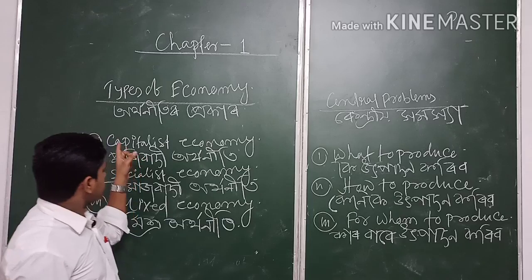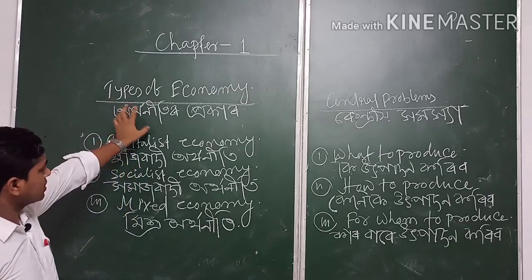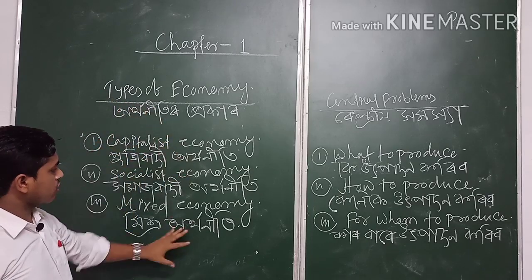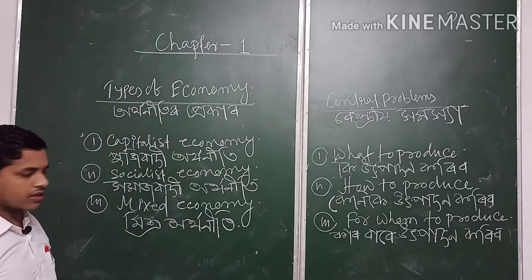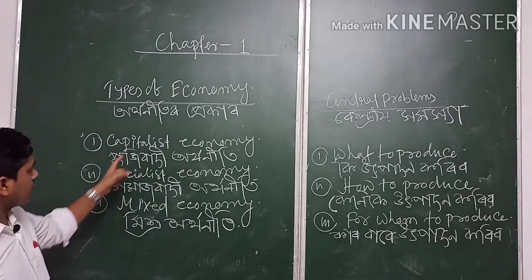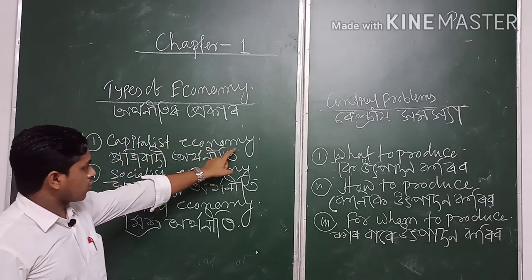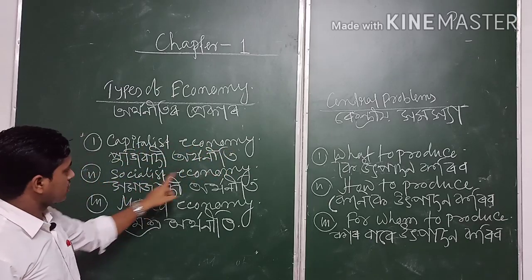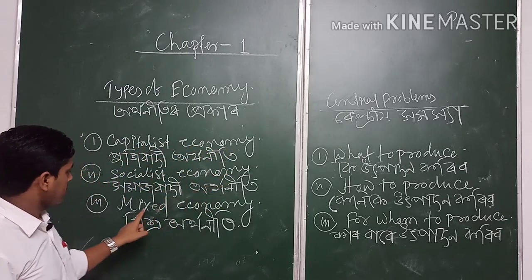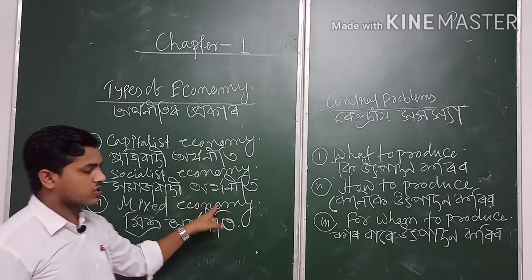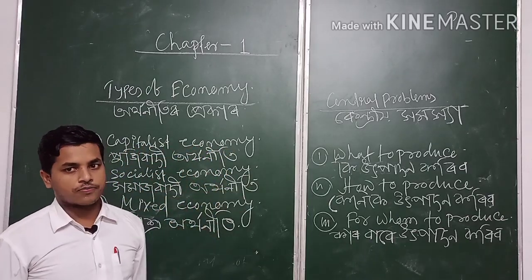There are basically three types of economies in the world: the Capitalist Economy, Socialist Economy, and Mixed Economy.